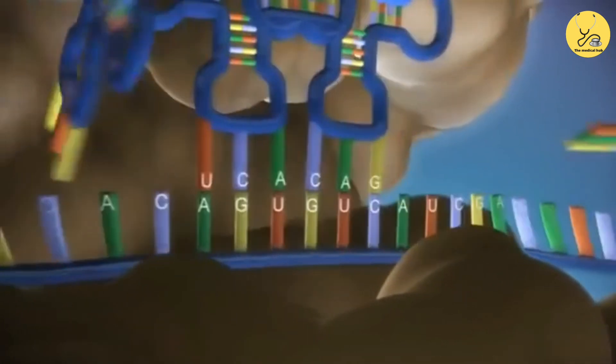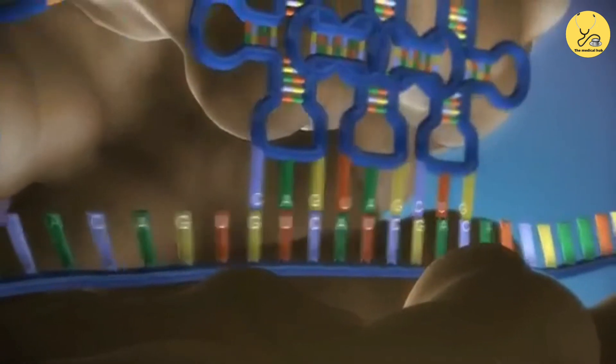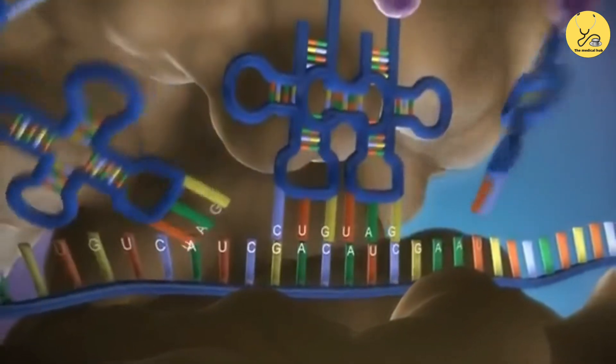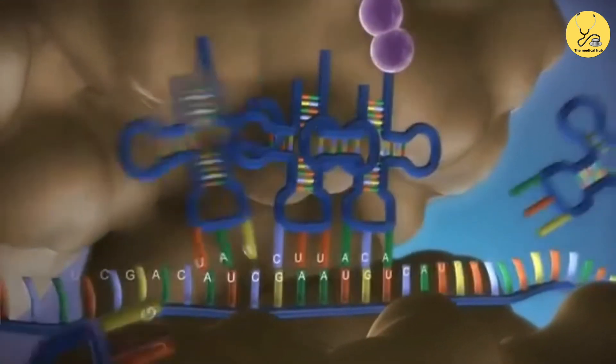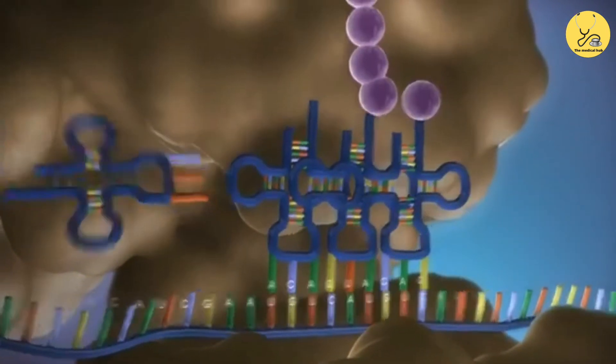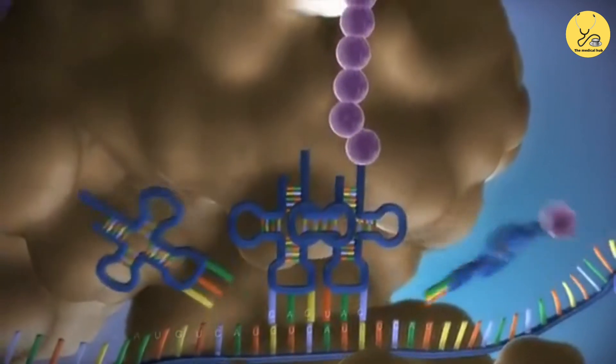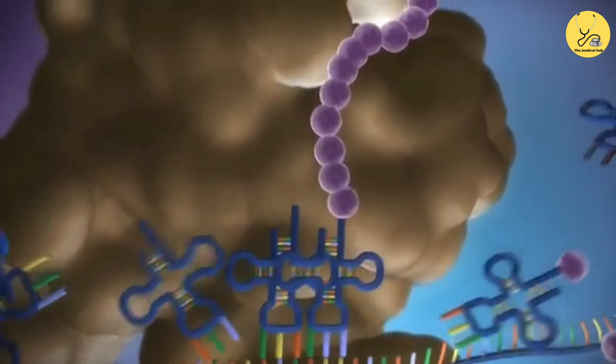The messenger RNA is read three bases at a time. As each triplet is read, a transfer RNA delivers the corresponding amino acid. This is added to a growing chain of amino acids.